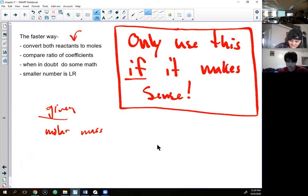All right my friends, only use what I'm about to say if it makes sense. If it doesn't, do everything that we were just doing. So here's a faster way to determine the limiting reactant. Convert both reactants to moles, compare the ratio of their coefficients, when in doubt do some math. The smaller number is the limiting reactant. So the first step is to convert both reactants to moles.